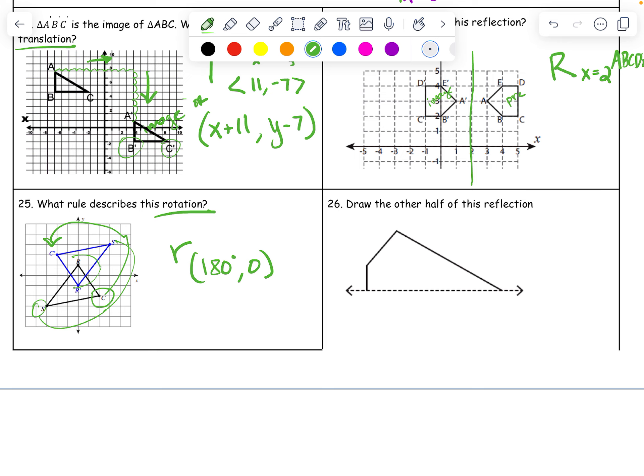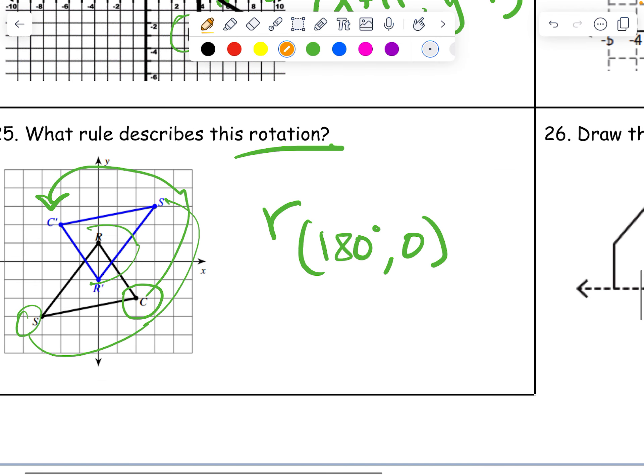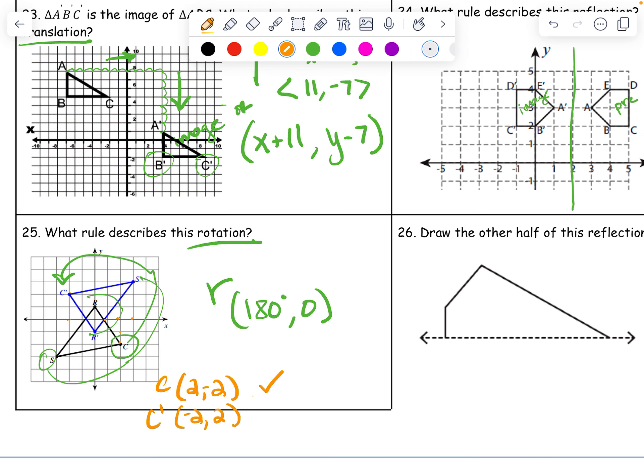You could check the points as well if you wanted. So C is at 2, 2. And the new C is at negative 2, negative 2. So all we did was change the signs. Yeah. That's C. That's C prime. So I think we did that right. Just double checking.